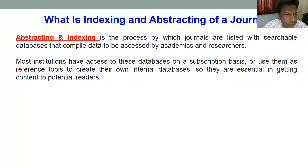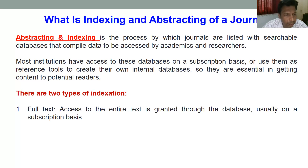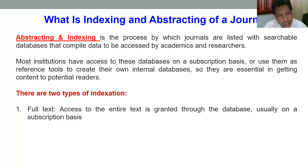These databases are based on subscriptions; most institutions can access them only after obtaining subscriptions. There are two types of indexing. The first is full text indexing, which means access to the entire text of the article is granted through the database, so you can download the complete research article if you have full text access.